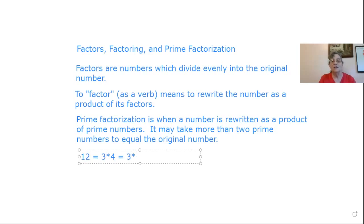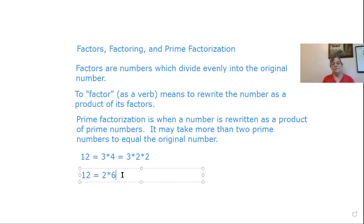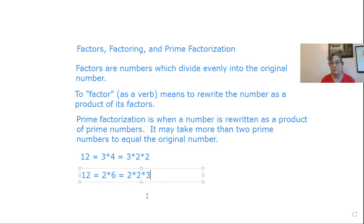So that becomes 2 times 2, meaning 12 can be broken down as 3 times 2 times 2. What if instead of 3 times 4 we had initially broken the 12 down as 2 times 6? This is still not a prime factorization because 6 can be broken down farther. 6 is 2 times 3, so this becomes 2 times 2 times 3. Notice that this is exactly the same combination of numbers that we got before. So while a number may have multiple factorizations, it's only going to have one prime factorization, as long as you don't take the order into account.